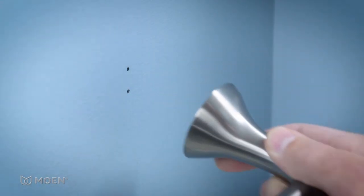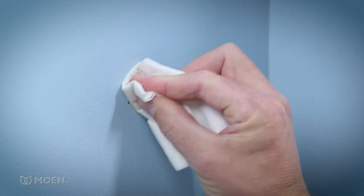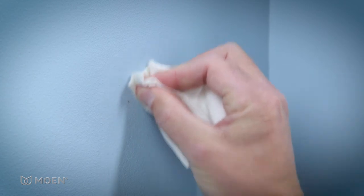Pull back to reveal the ink dots that show you exactly where to drill. If you make a mistake, simply wipe off the ink marks with a damp cloth and try again.